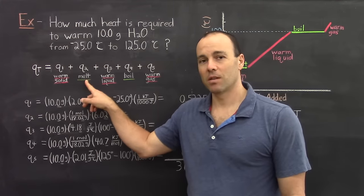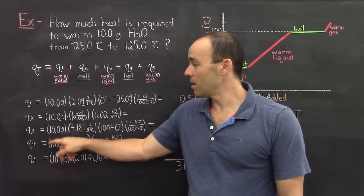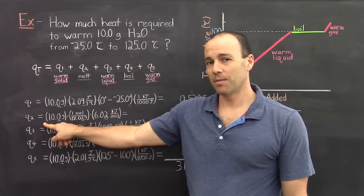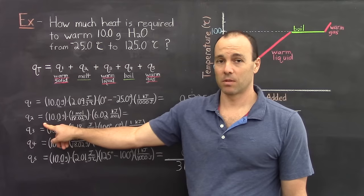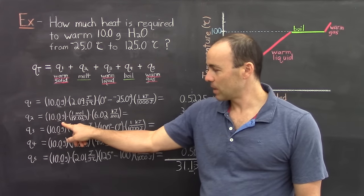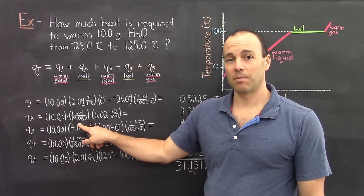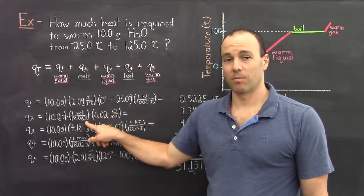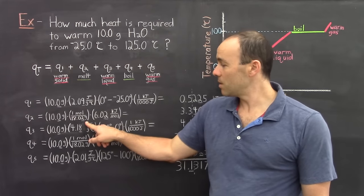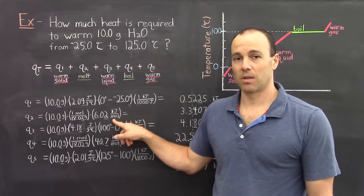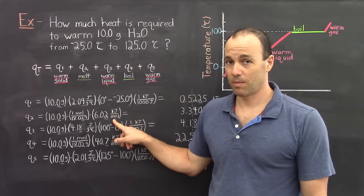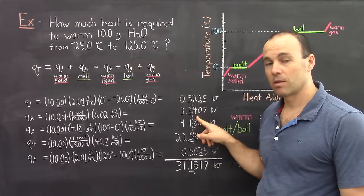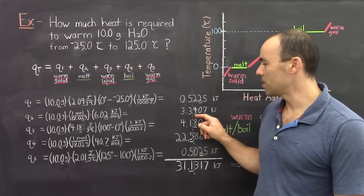The second stage is melting. When you melt a substance, it's the number of moles times the heat of fusion. So we convert our 10 grams to moles by multiplying by 1 mole divided by 18.02 grams, giving us the number of moles. Multiplying by the heat of fusion — 6.02 kilojoules per mole — gives 3.3407 kilojoules, another three significant figure number.